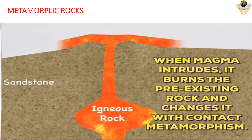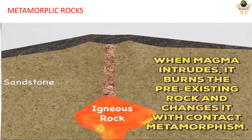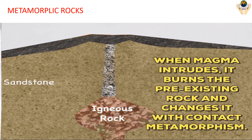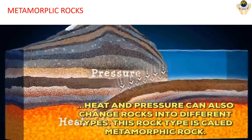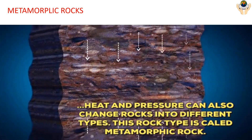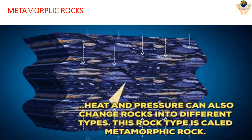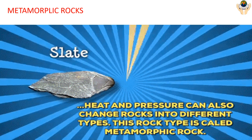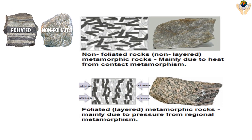Metamorphic rocks: when magma intrudes, it changes pre-existing rock through contact metamorphism. Heat and pressure can also change rocks into different types — this rock type is called metamorphic rock. There are two types of metamorphic rocks: foliated and non-foliated. Foliated means layered — these rocks form mainly due to pressure from regional metamorphism. Non-foliated means non-layered.